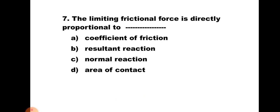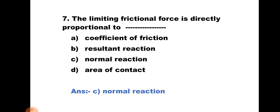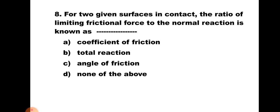Question number seven: The limiting frictional force is directly proportional to — a) Coefficient of friction, b) Resultant reaction, c) Normal reaction, and d) Area of contact. Limiting frictional force is always proportional to the normal reaction. Hence the correct answer is c) Normal reaction.